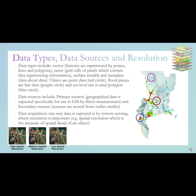Clinics are point data, circled in red on the map. Floodplanes are line data, circled in purple. Sea level rise is area or polygon data, circled in blue. Data sources include primary sources, where geological data is captured specifically for use in GIS by direct measurements, and secondary sources, which are reused from earlier studies such as scanned maps.